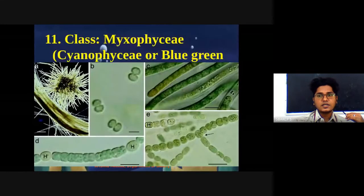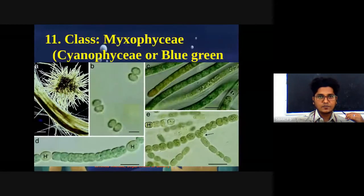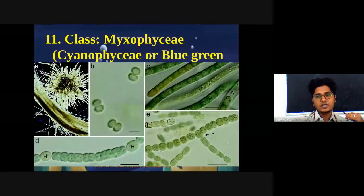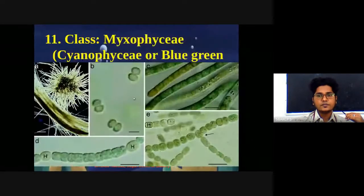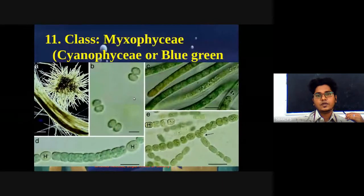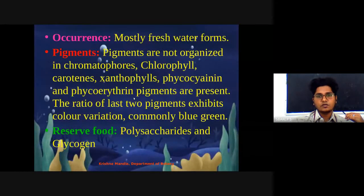The last class is Myxophyceae. You can also call them blue-green algae, or Cyanophyceae. These blue-green algae differ in their distribution — mostly you can see them in freshwater forms.